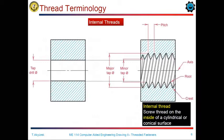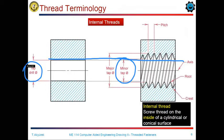For internal threads, we must think in two steps. We first have to make a drilling, then form the thread. The minor diameter of the internal thread will be equal to the tapping drill dimension. The major diameter of the internal thread is formed by a tap or a machine input.